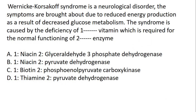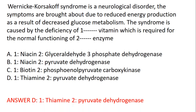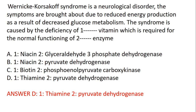The first question: Wernicke-Korsakoff syndrome is a neurological disorder. The symptoms are brought about due to reduced energy production as a result of decreased glucose metabolism. The syndrome is caused by the deficiency of one vitamin required for the normal functioning of two enzymes. The answer: the first part is thiamine, and the second part is pyruvate dehydrogenase — so the answer is D.